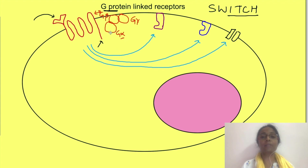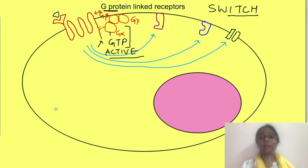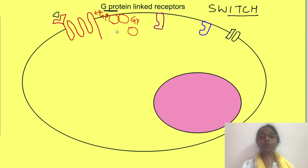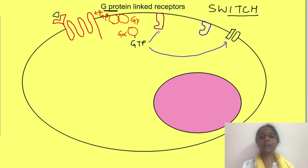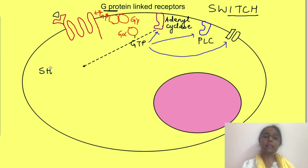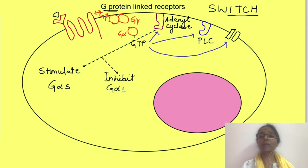The alpha subunit (G alpha) is bound to GDP in the inactive state. When the hormone binds to its receptor, the receptor interacts with the G proteins and the GDP bound to the alpha subunit is replaced by GTP, placing it in the active state. This replacement of GDP with GTP causes the alpha subunit to dissociate from the beta and gamma subunits and associate with other proteins, causing opening or closing of ion channels, or affecting enzymes like adenyl cyclase and phospholipase C. G proteins that stimulate adenyl cyclase are called G stimulatory proteins (G alpha S), while those that inhibit it are called inhibitory G proteins (G alpha I).